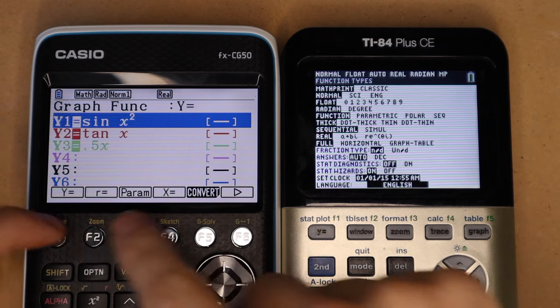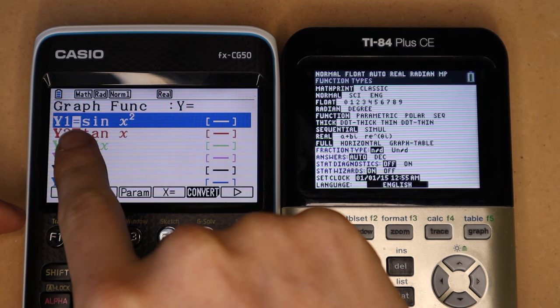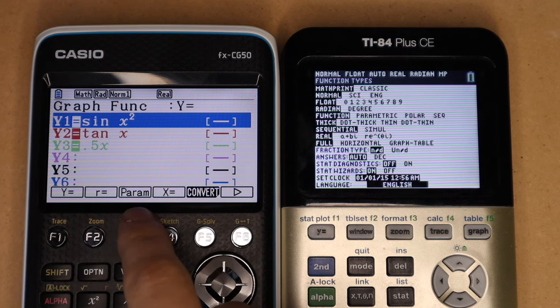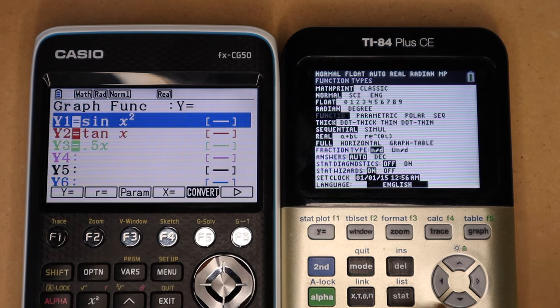Also, both calculators have the ability to graph different types of functions. So right now, we just did normal Cartesian coordinates, but you can also graph in parametric or polar coordinates on both calculators.